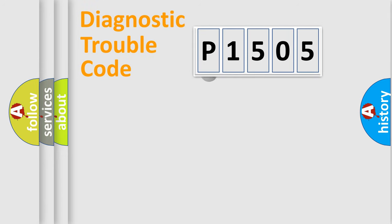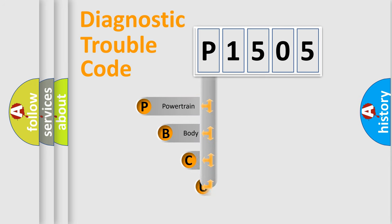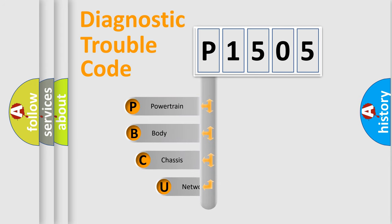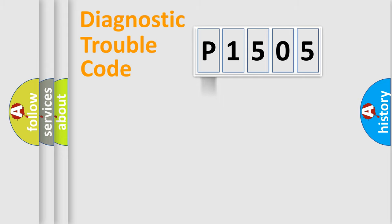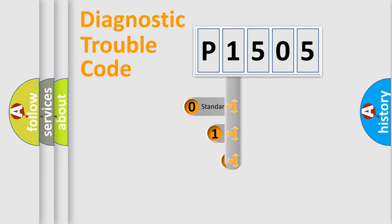First, let's look at the history of diagnostic fault code composition according to the OBD2 protocol. We divide the electric system of an automobile into four basic units: powertrain, body, chassis, and network. This distribution is defined in the first character of the code.